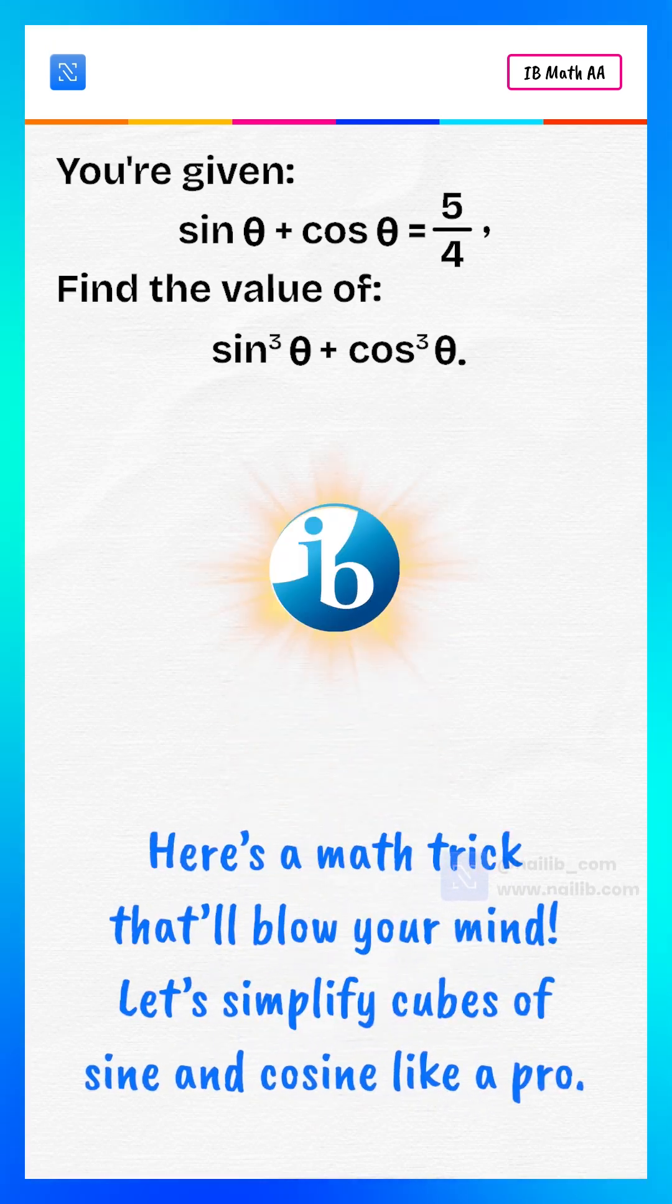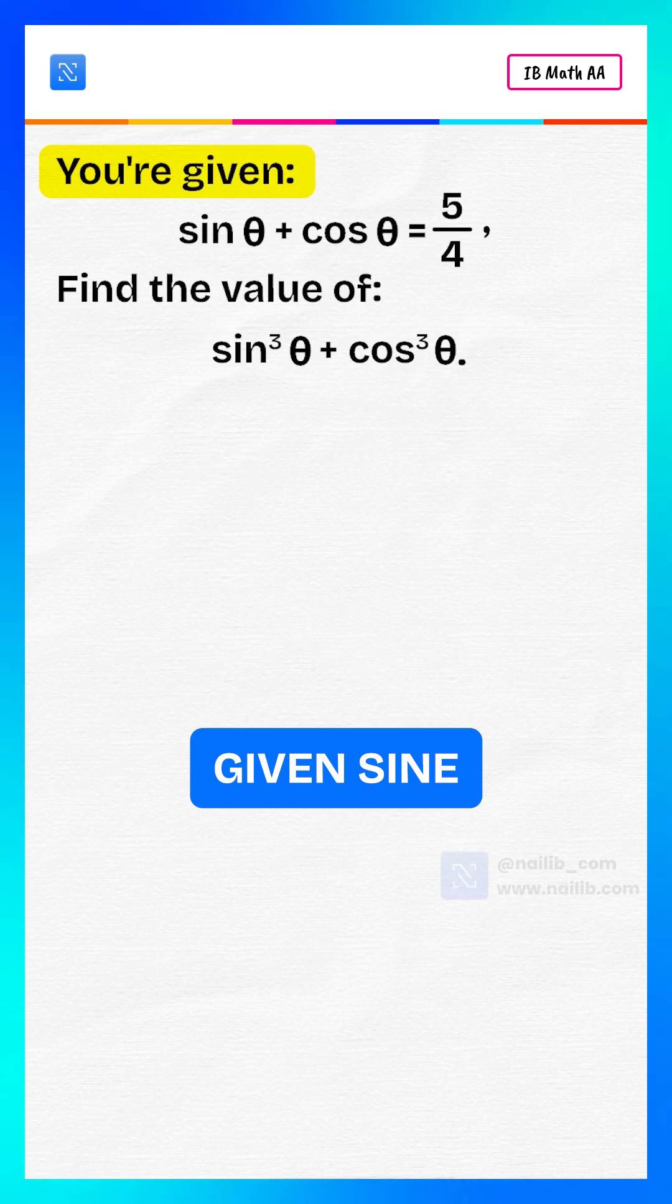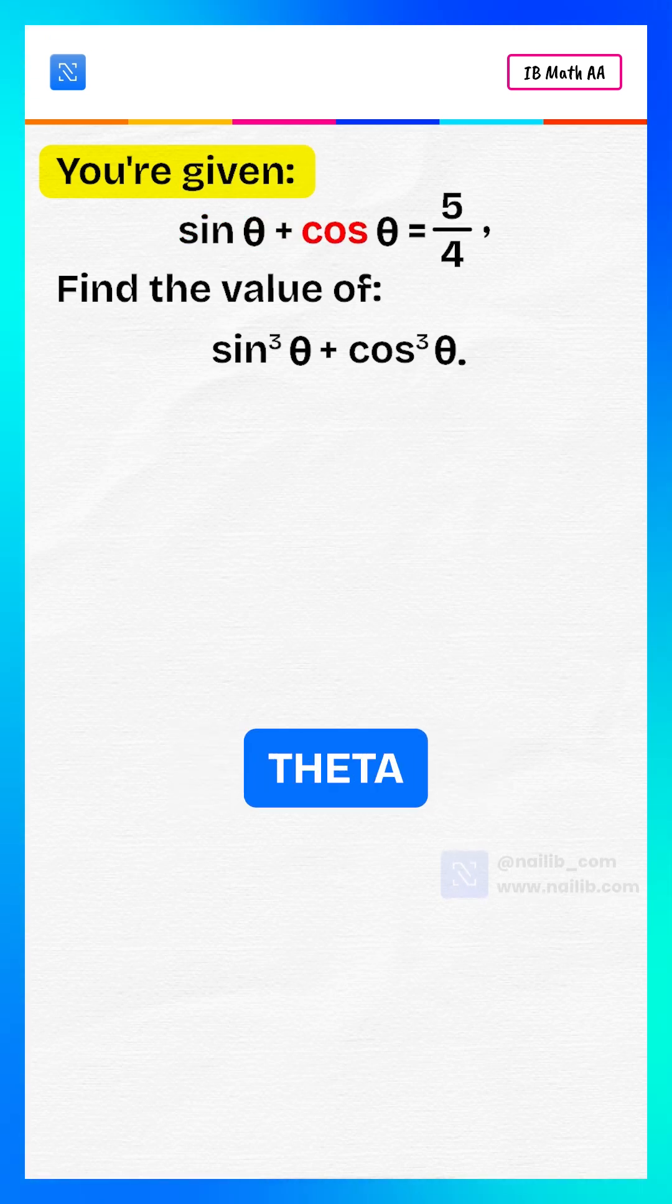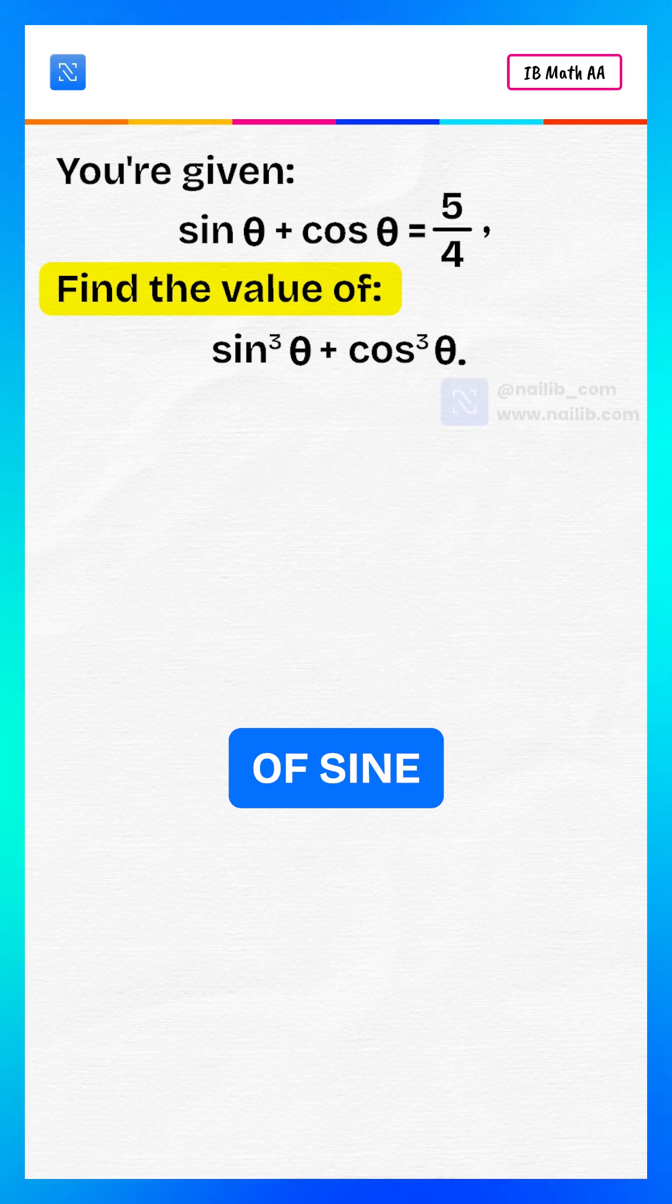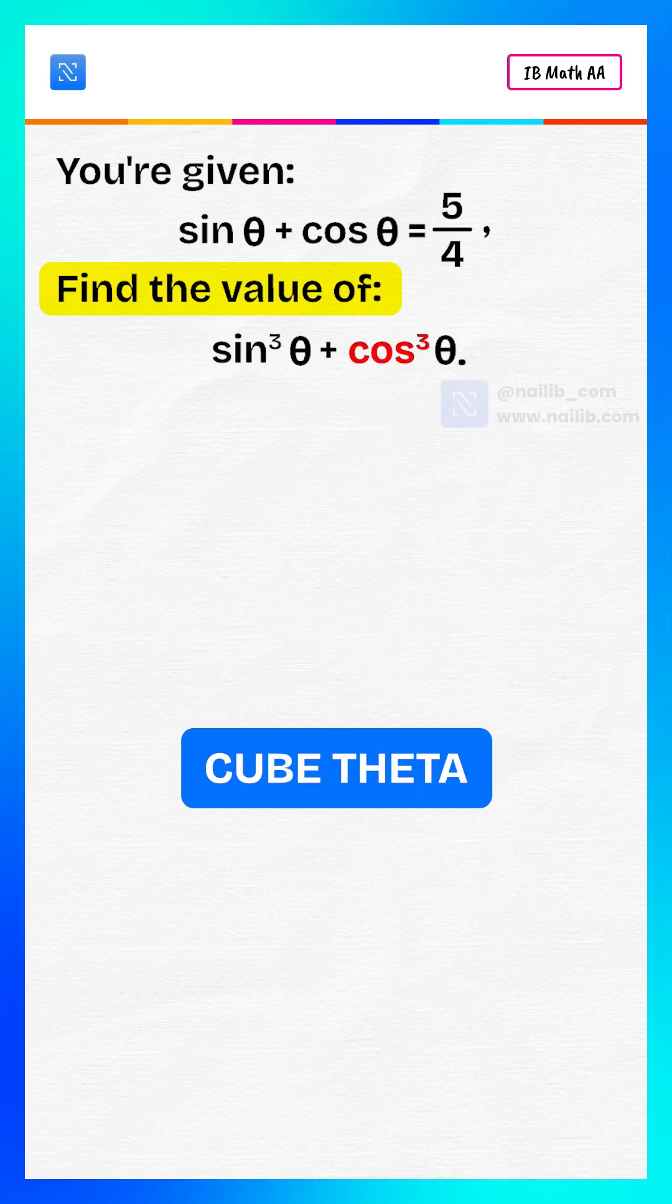Here's a math trick that'll blow your mind. Let's simplify cubes of sine and cosine like a pro. You're given sin θ + cos θ = 5/4. Find the value of sin³θ + cos³θ.